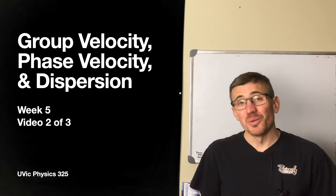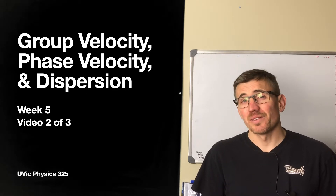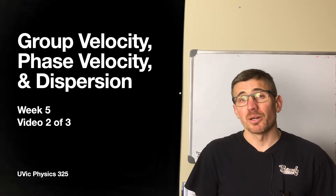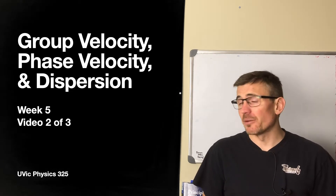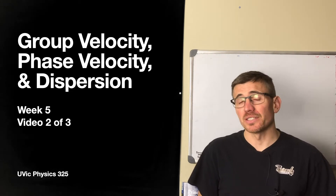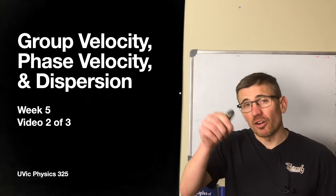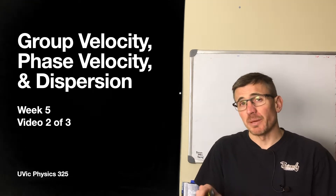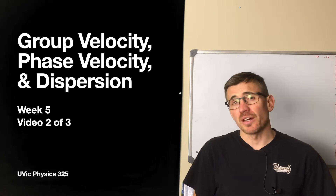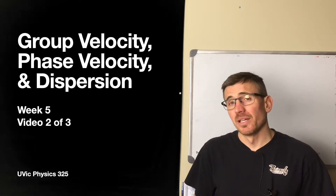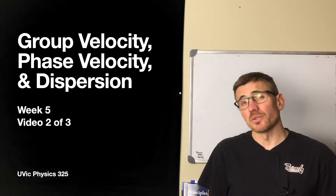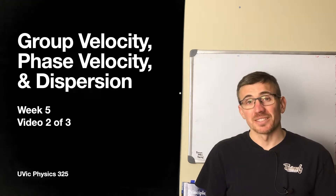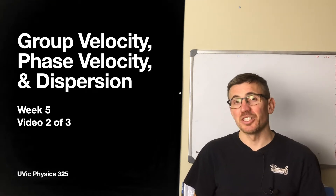Welcome back. Video 2 of week 5 of Physics 325, Optics. Last video we talked about Fourier analysis, how we add up harmonic functions to make kind of any arbitrary shape of functions. We saw that we could do that in terms of space and in terms of time. This week is all about time, and we're going to start using those results to deal with polychromatic fields. Let's start with some definitions and de-jargonize it.